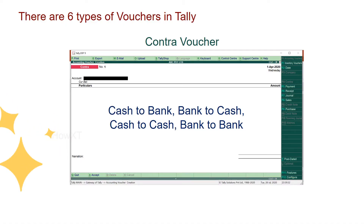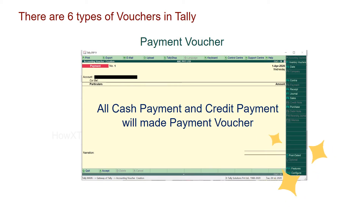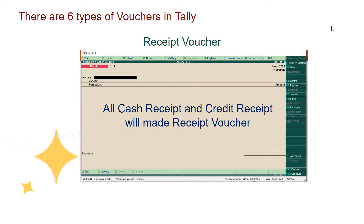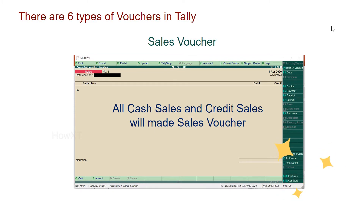Tally has six types of vouchers. Number one: Contra — cash to bank, bank to cash, cash to cash, bank to bank; all such entries come under Contra. Number two: Payment voucher — all cash payments and credit payments will be payment vouchers. Number three: Receipt voucher — all cash receipts and credit receipts will be made in the receipt voucher.